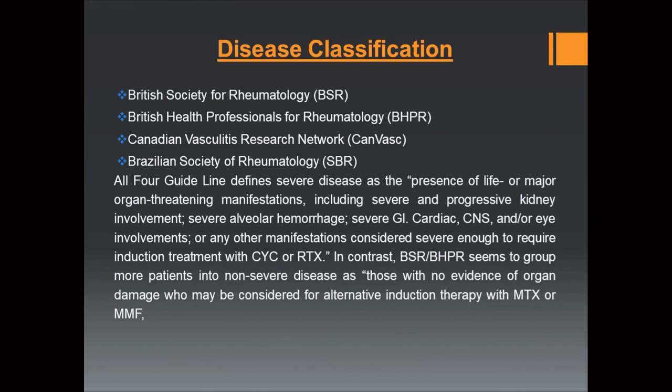The ANCA-associated vasculitis RPGN classification by the British Society of Rheumatology, British Health Professionals for Rheumatology, the Canadian Vasculitis Research Network, and the Brazilian Society of Rheumatology classifies the disease as severe and non-severe. Severe disease is manifested by severe alveolar hemorrhage, severe GI, cardiac, CNS, or eye involvement, and other manifestations considered severe enough to require induction treatment, including severe renal failure. Those who don't have these features are described as non-severe.